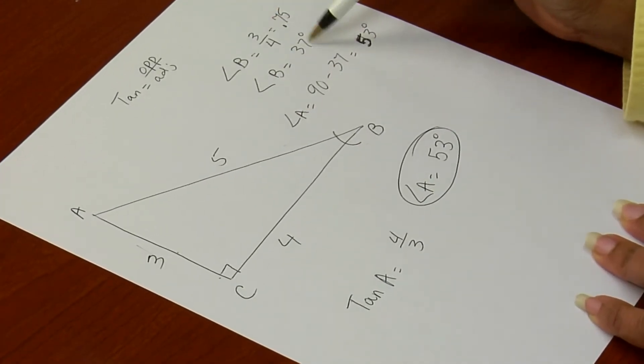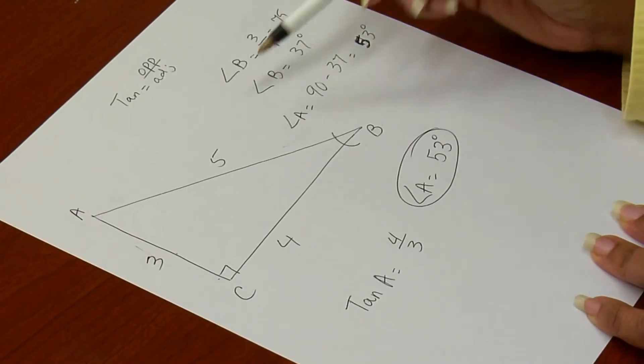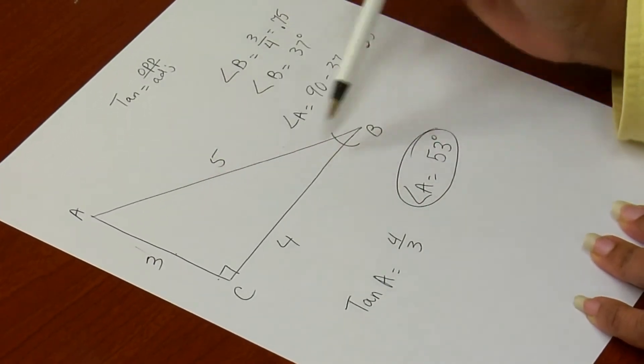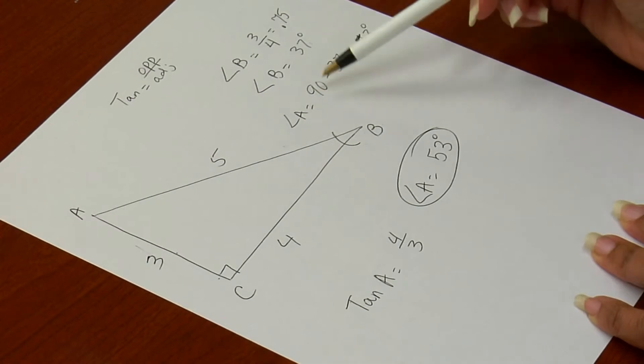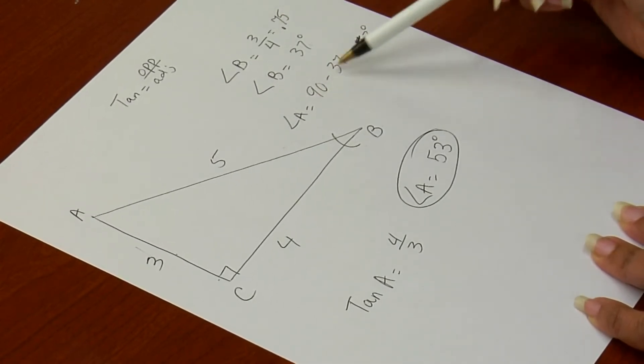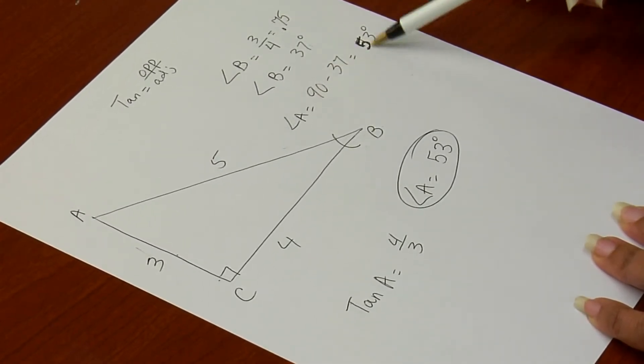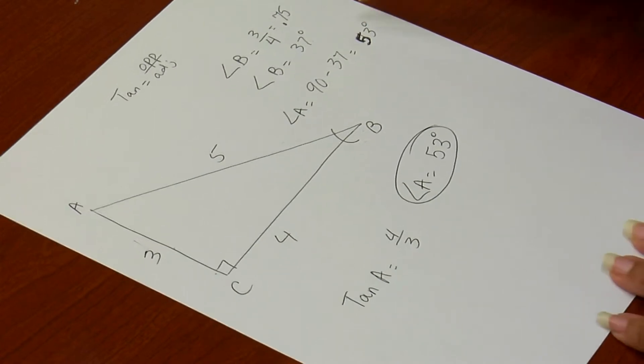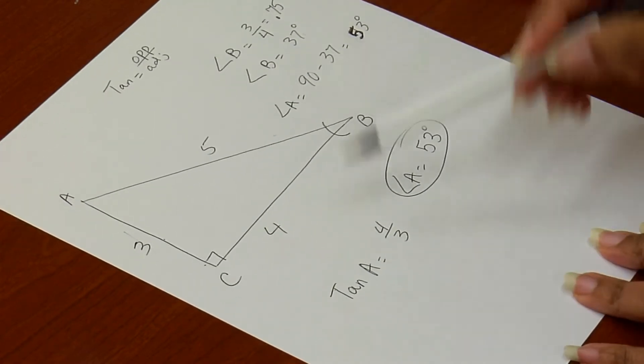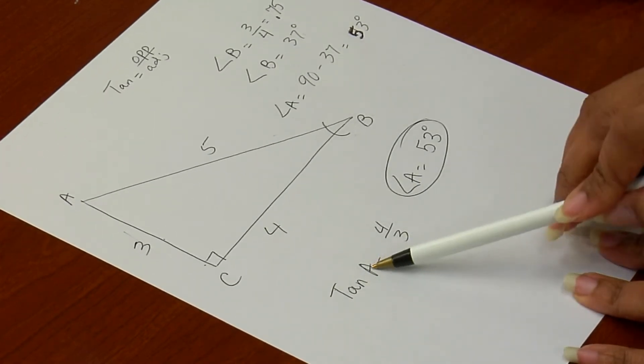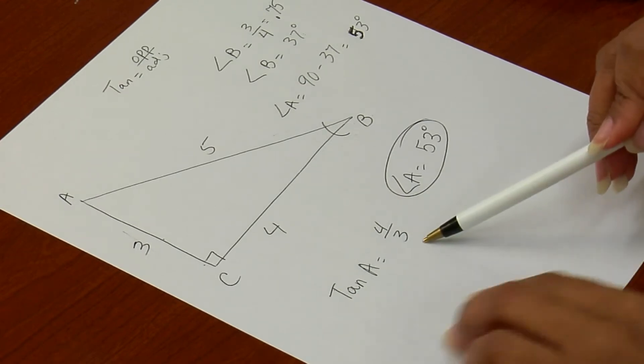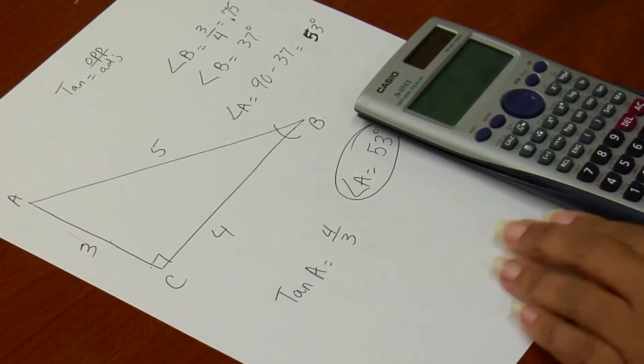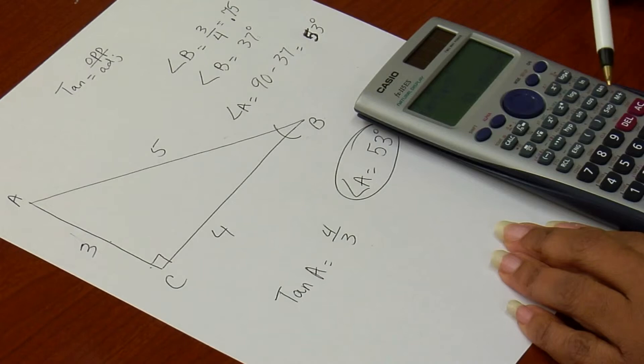Once I have my angle B, which is 37 degrees, the two angles together would total 90 degrees. So angle A would also be 90 minus 37, which would give us 53 degrees. Using our trig ratio, tan angle A, 4 over 3, using my calculator with the inverse key, 4 divided by 3, 53 rounded to the nearest whole number, 53 degrees.